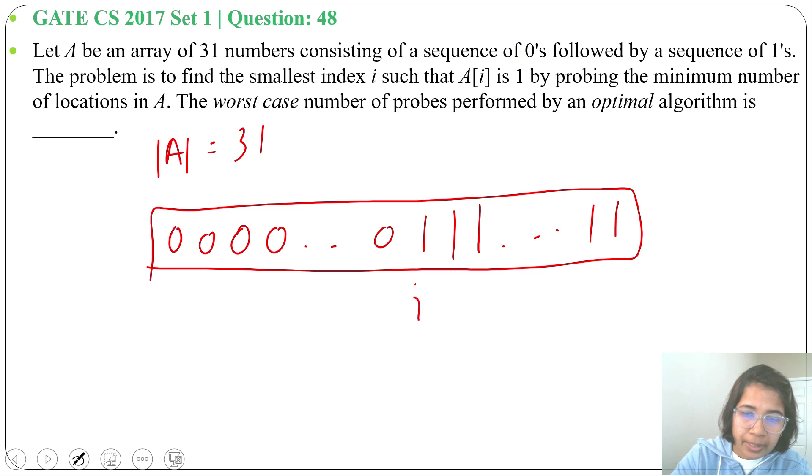So we need to find this index which contains the first one. Sequence of zeros followed by sequence of ones, so it is in sorted order. When the array is in sorted order we can apply binary search. So the optimal algorithm will be binary search.